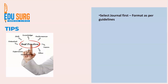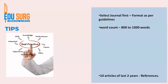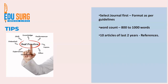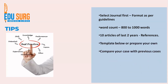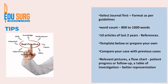Some important tips: select the journal first so that you can format your article as per the journal guidelines from the beginning. Word count in most journals for case series is 800 to 1000 words, and that is where the tabular presentation of case details helps. Finding 10 articles from the last two years will easily create your references. Always compare your case with previous cases in the discussion, and relevant pictures, flowcharts, patient progress, and tables of investigations all help in beautifying the article. Keep patient consent forms handy, because you can't find these patients once they are discharged.